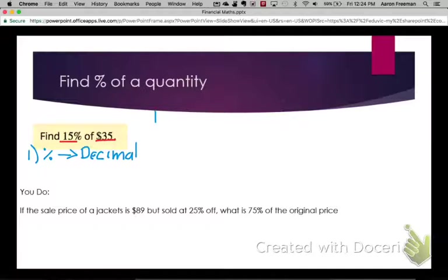Take our 15% and as we've done before, divide that by 100 to give us 0.15.